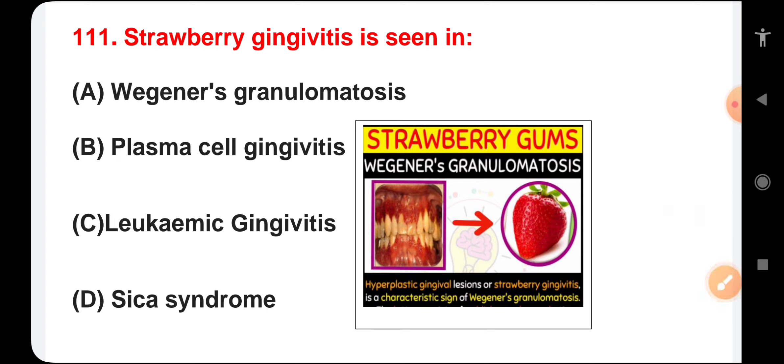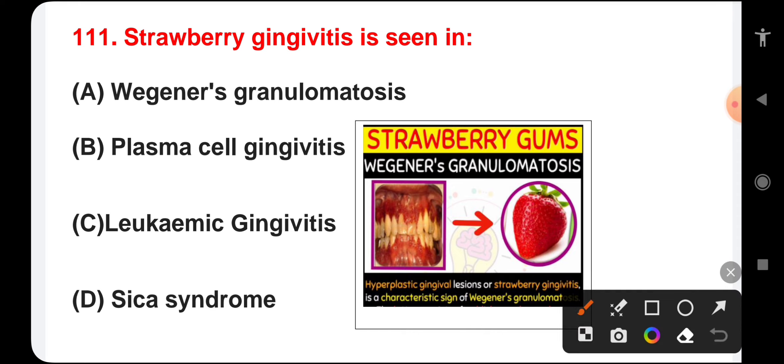Strawberry gingivitis is seen in Wegener's granulomatosis, plasma cell gingivitis, leukemic gingivitis, or Sjögren's syndrome. Strawberry gingivitis, also called hyperplastic gingivitis, is a characteristic sign of Wegener's granulomatosis.